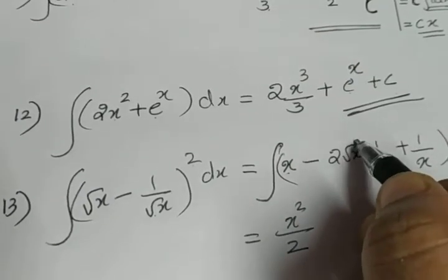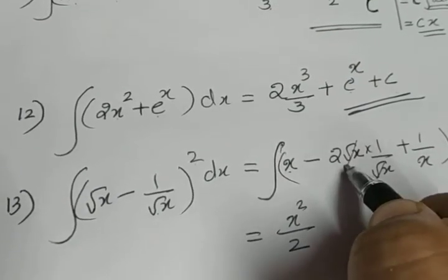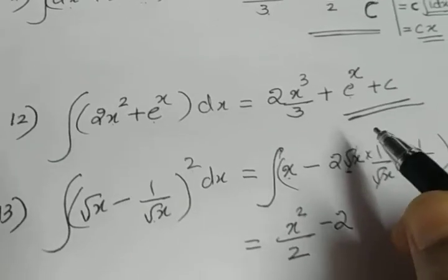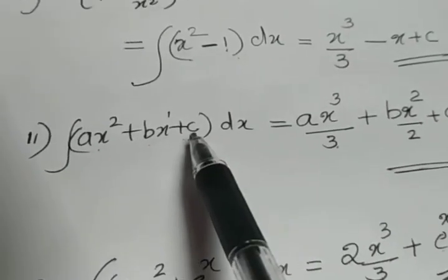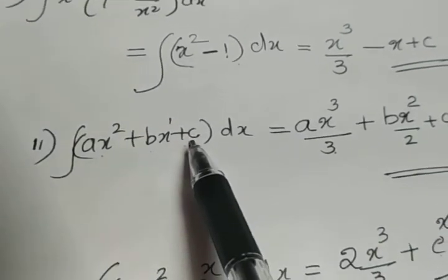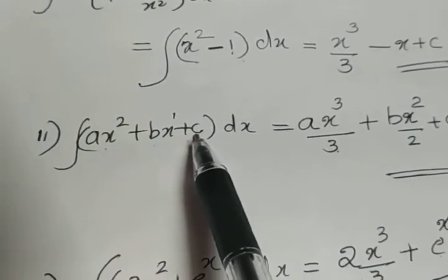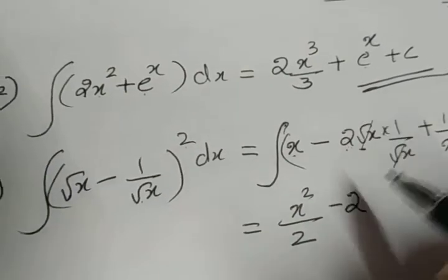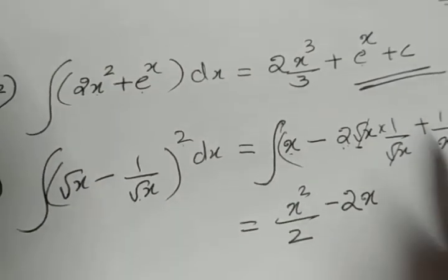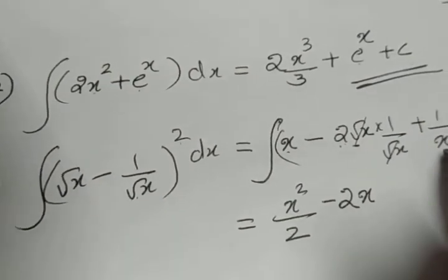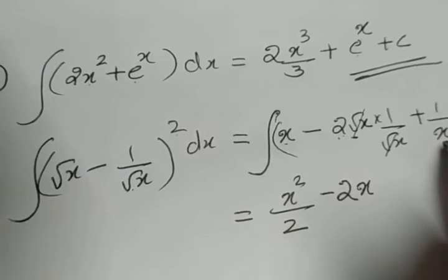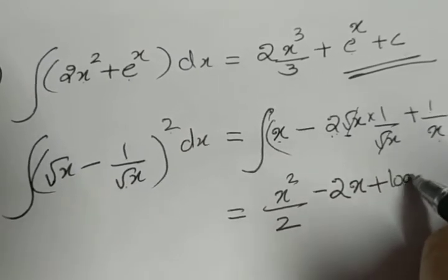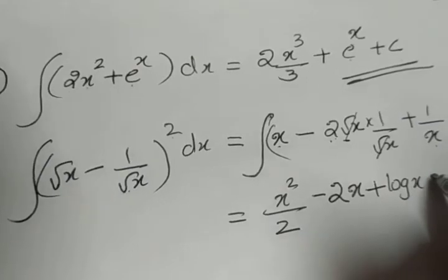Now integrate term by term. Integral of x is x²/2. The middle term: 2 × (√x/√x) simplifies to 2, a constant, so its integral is 2x. The last term is 1/x, and the function whose derivative is 1/x is log x. So the final answer is x²/2 - 2x + log x + C.